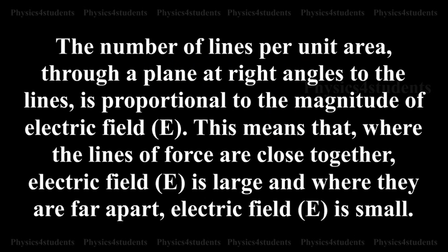The number of lines per unit area through a plane at right angles to the lines is proportional to the magnitude of electric field E. This means that where the lines of force are close together, E is large, and where they are far apart, E is small.